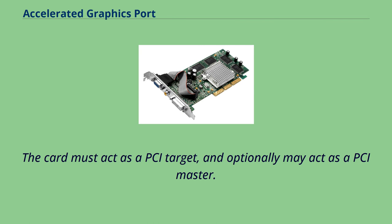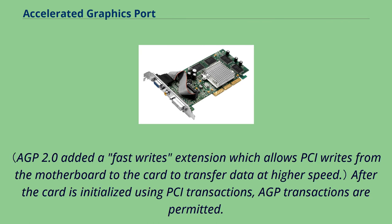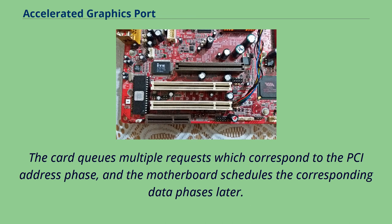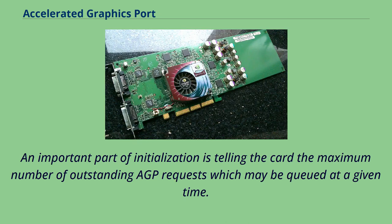The card must act as a PCI target, and optionally may act as a PCI master. After the card is initialized using PCI transactions, AGP transactions are permitted. For these, the card is always the AGP master and the motherboard is always the AGP target. The card queues multiple requests which correspond to the PCI address phase, and the motherboard schedules the corresponding data phases later. An important part of initialization is telling the card the maximum number of outstanding AGP requests which may be queued at a given time.